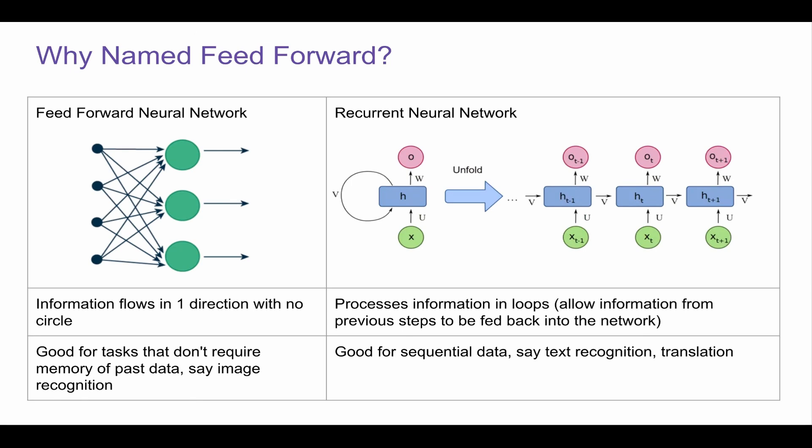First of all, why name it Feed Forward? This concept is actually comparing to another concept, which is recurrent network. Before Transformer, recurrent network was mainly used in machine translation, text recognition, etc. And there's a reason for that. Recurrent neural network can process information in loops, which allows information from previous steps from the past to be fed back into the network. This is great for sequential data because it holds some memory. So text recognition, machine translation, this model works perfectly.